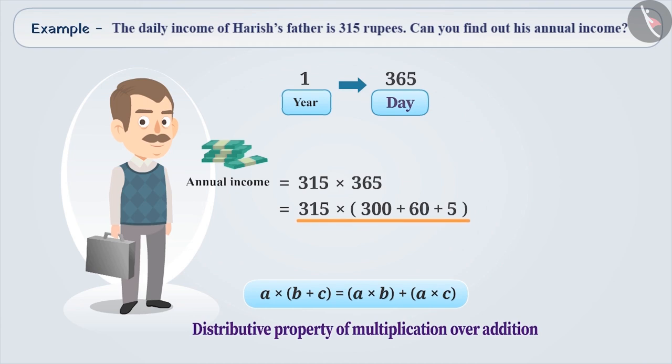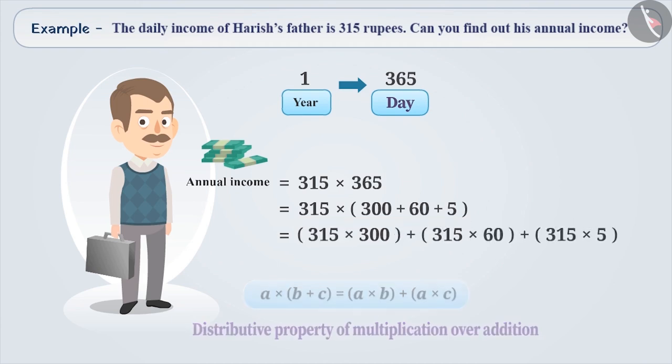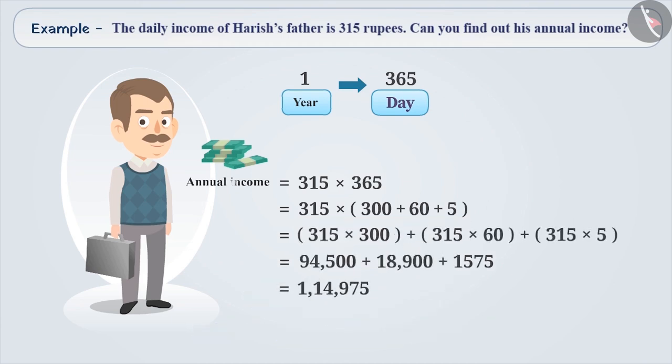By distributivity of multiplication over addition, we can write it as follows. Solving this, we get the annual income as Rs. 1,14,975.